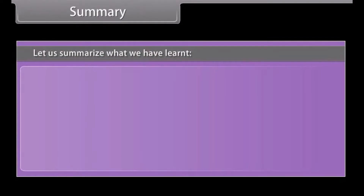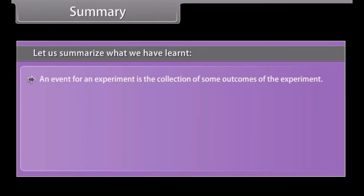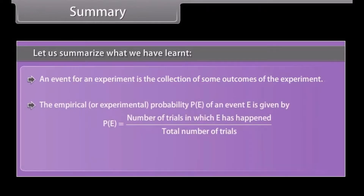Summary: let us summarise what we have learnt. An event for an experiment is the collection of some outcomes of the experiment. The empirical or experimental probability P(E) of an event E is given by: P(E) = number of trials in which E has happened upon total number of trials. The sum of all the probabilities is 1.